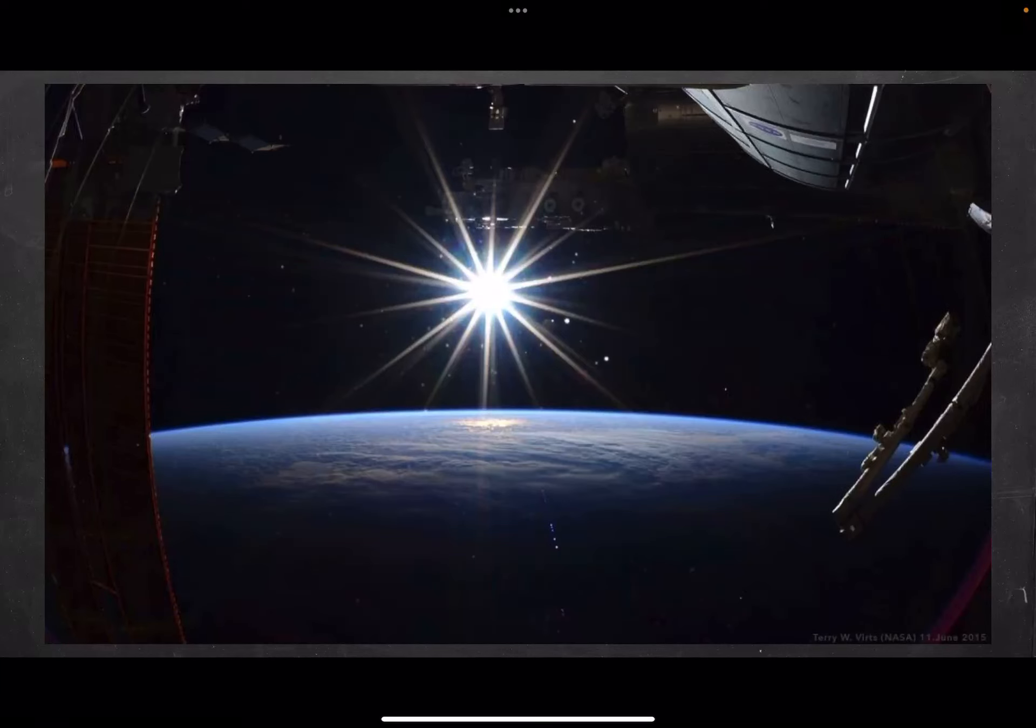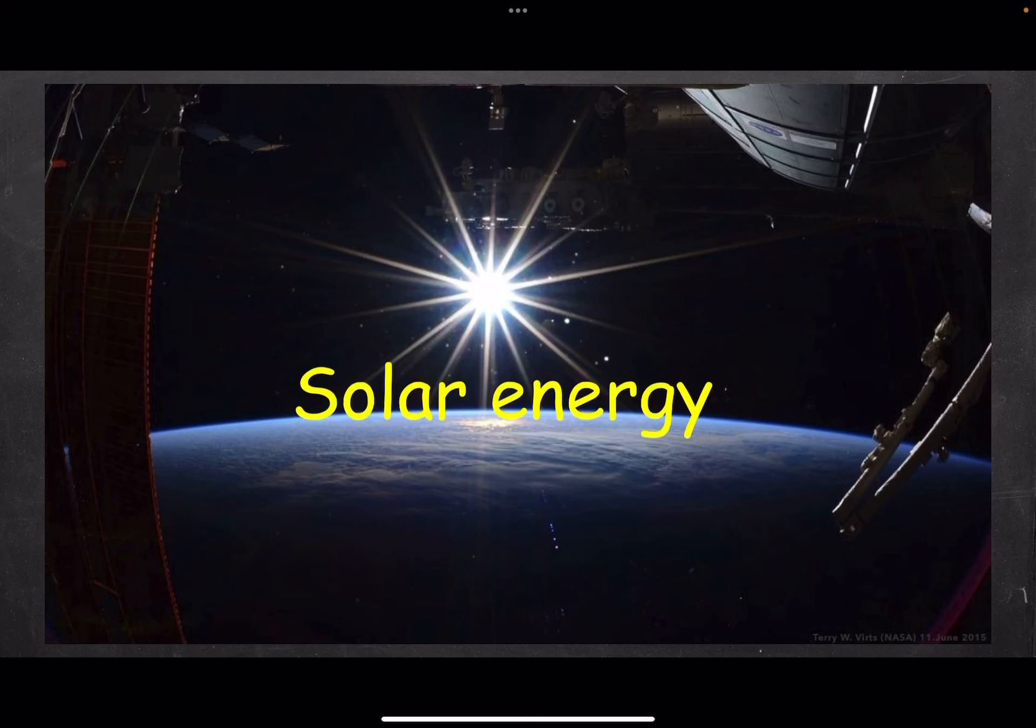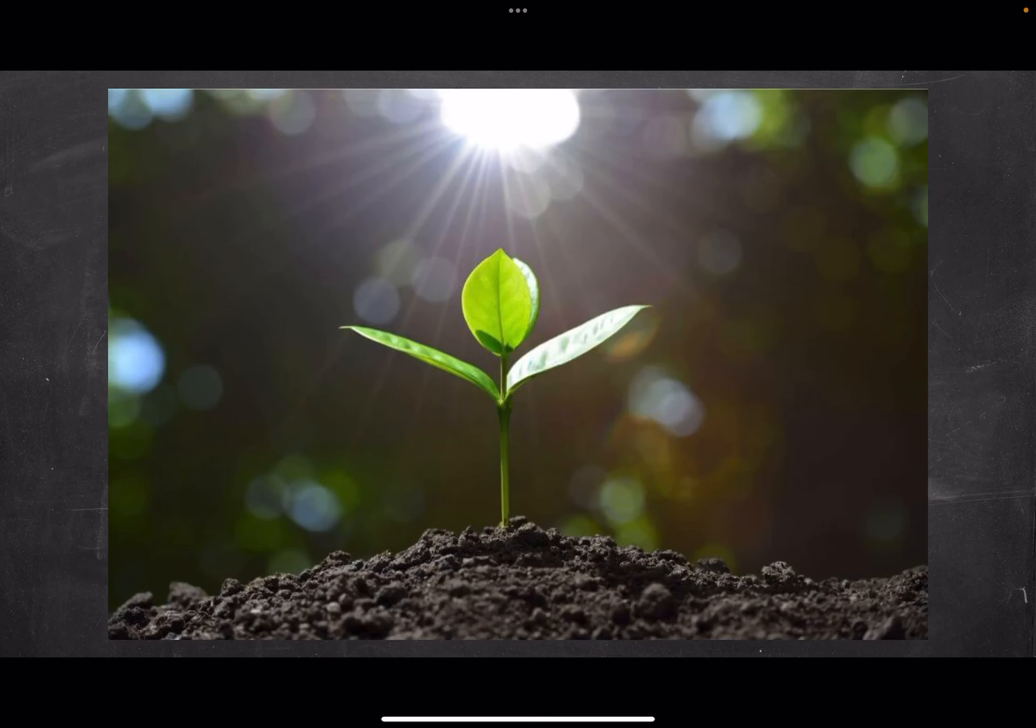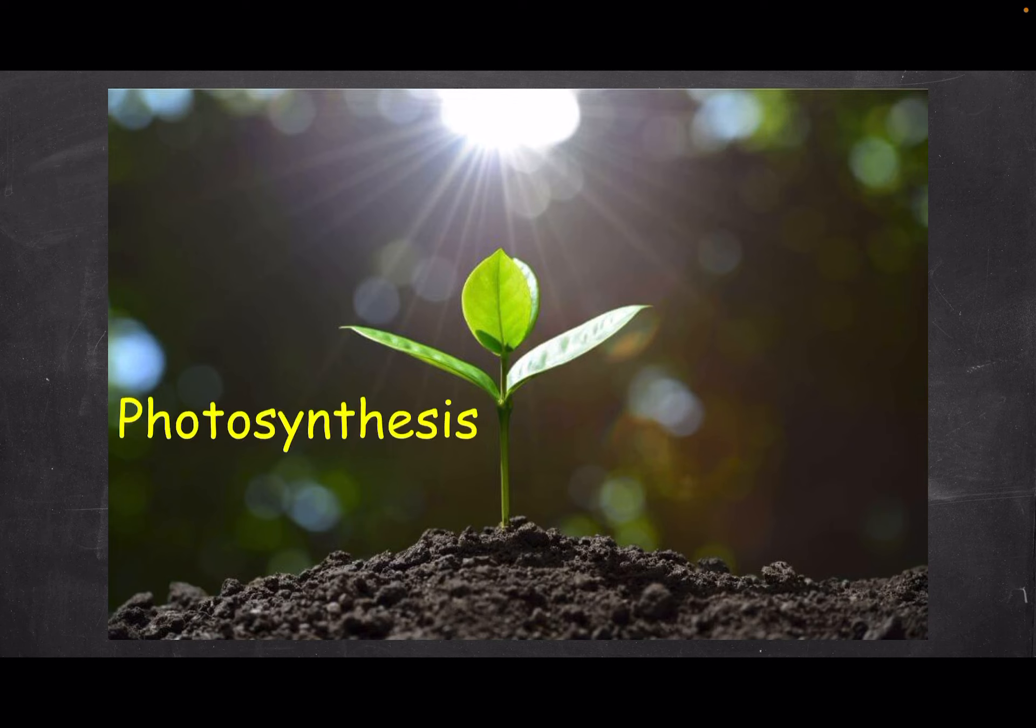The Sun radiates huge amounts of energy every second. The energy that the Sun radiates is referred to as solar energy. Solar energy is mostly a combination of heat and light energy. The light energy that reaches planet Earth is used by producers or autotrophs like this plant in a process known as photosynthesis.